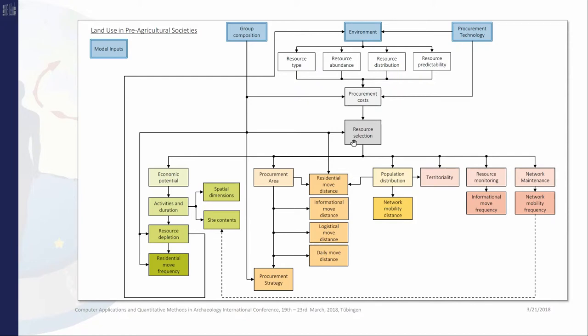This resource selection, along with the attributes of the resources selected, determines four groups of land use elements. In green, what happens in a site. In orange, how people procure their resources. In yellow, where they go in the landscape. In red, how they cope with resource insecurities. In this project, I'm focusing on population distribution, settlement pattern, and mobility.